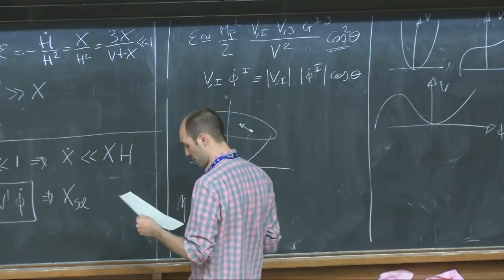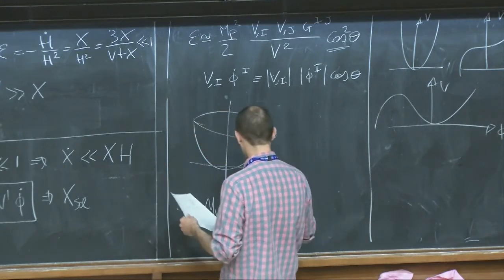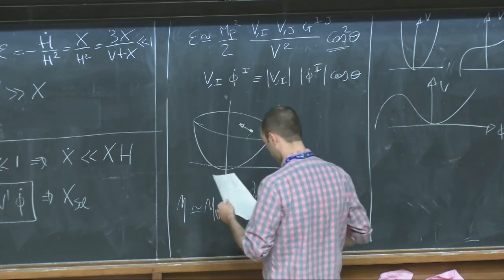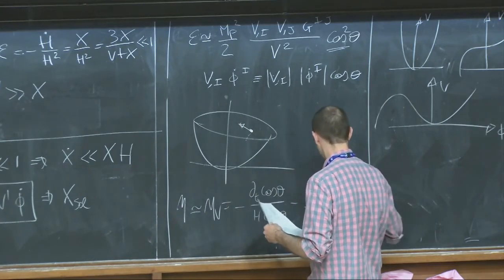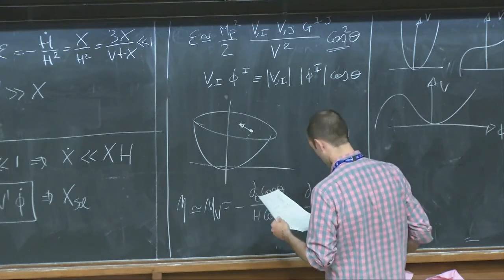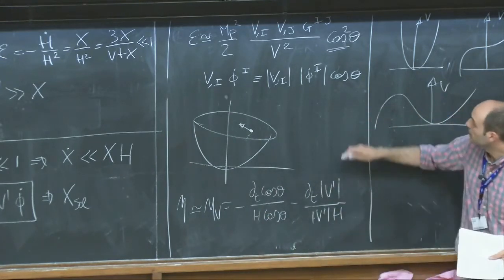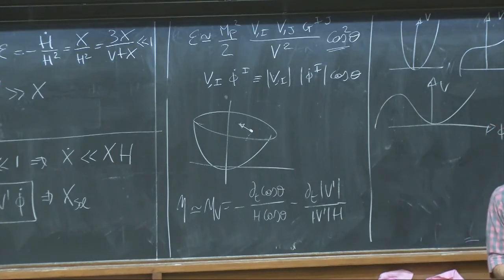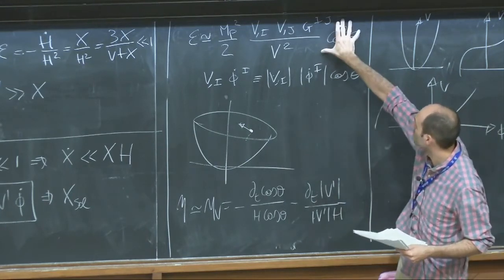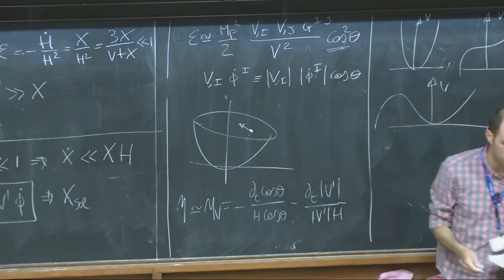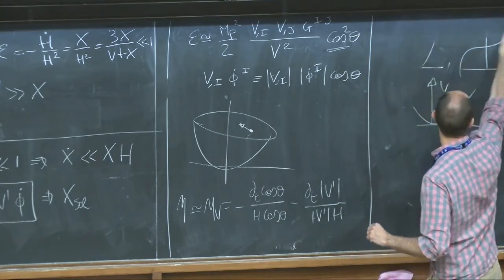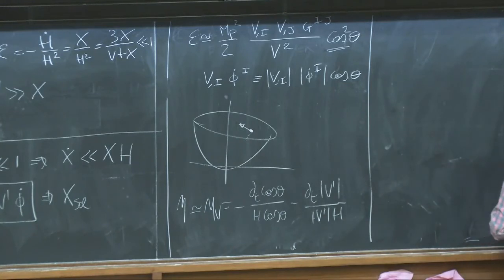For completeness, the analog of eta_V in multi-field is a more complicated equation. These are the correct approximations for Hubble slow-roll parameters in multi-field. There is a large chunk of multi-field inflation that has never been really explored; many no-go theorems in string theory are based on epsilon without this cosine factor being small, and perhaps should be revised. I leave that for future generations.